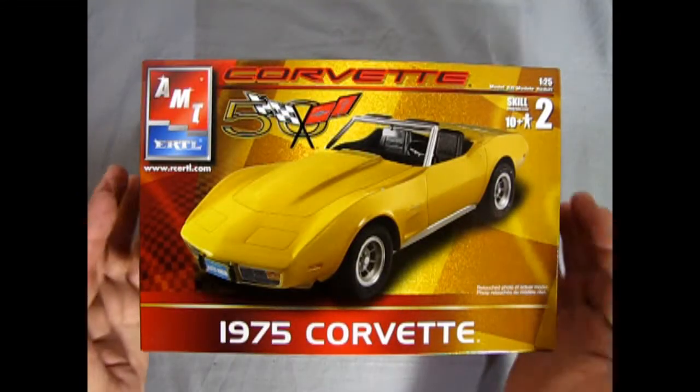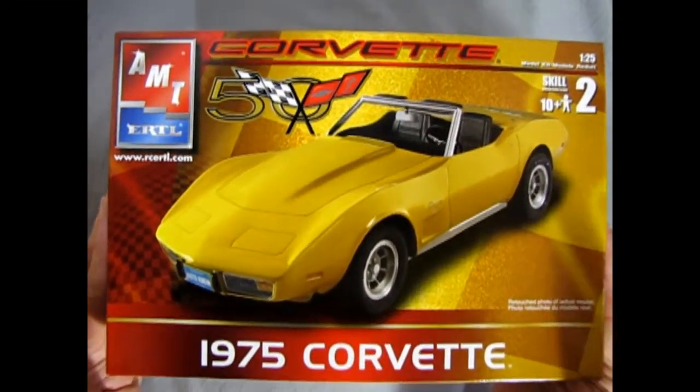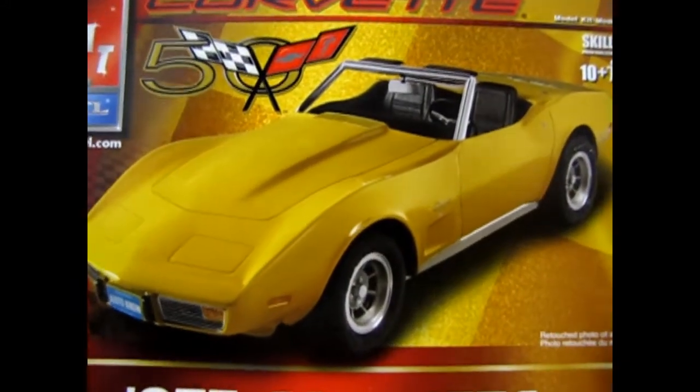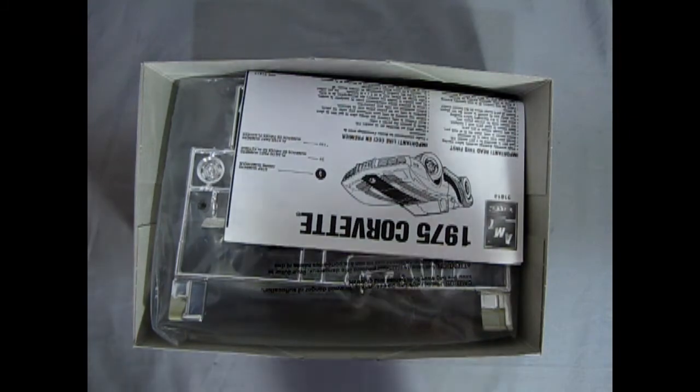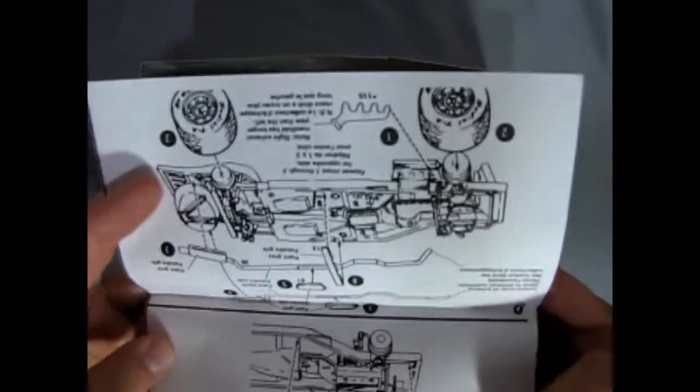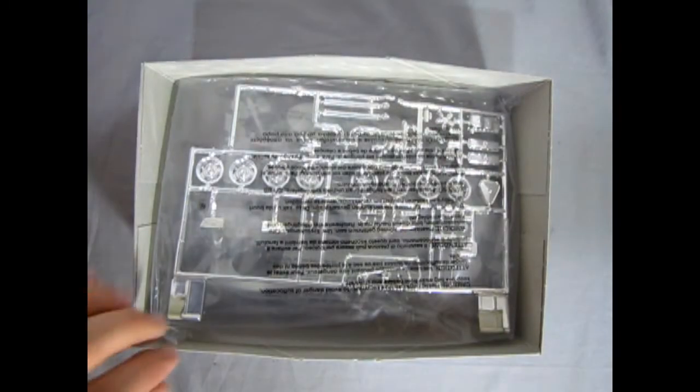And now with the shrink wrap removed we can easily lift the lid off this model. And there it is. Now you can see inside we have our instruction sheet which we'll take a look at later on in the video. Make sure there's no decals to spring out on us.